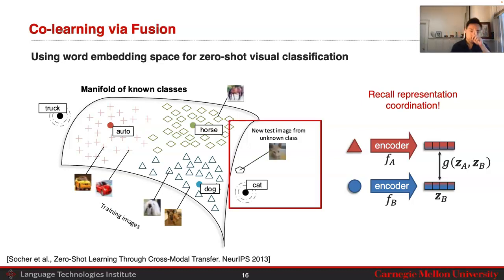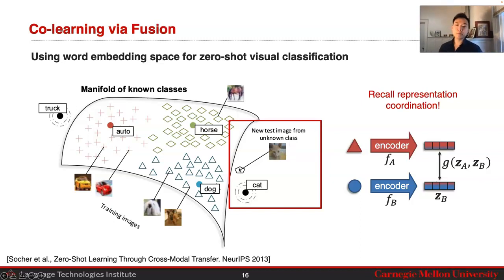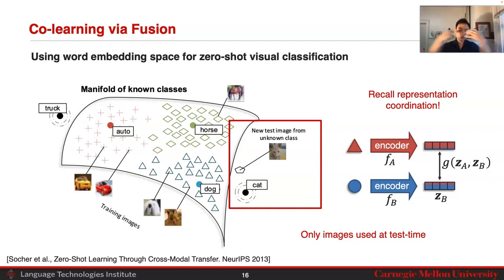Once this embedding space is trained, if you have a new test image from an unknown class — say a cat, with no cat images seen before — and if representation coordination was done properly, the image embedding of that cat should be nearby the word embedding of 'cat.' Since word embeddings place cats and dogs nearby due to shared features, this enables few-shot classification by looking up the nearest word embedding. Only images are used at test time once the word embedding space is structured during training.